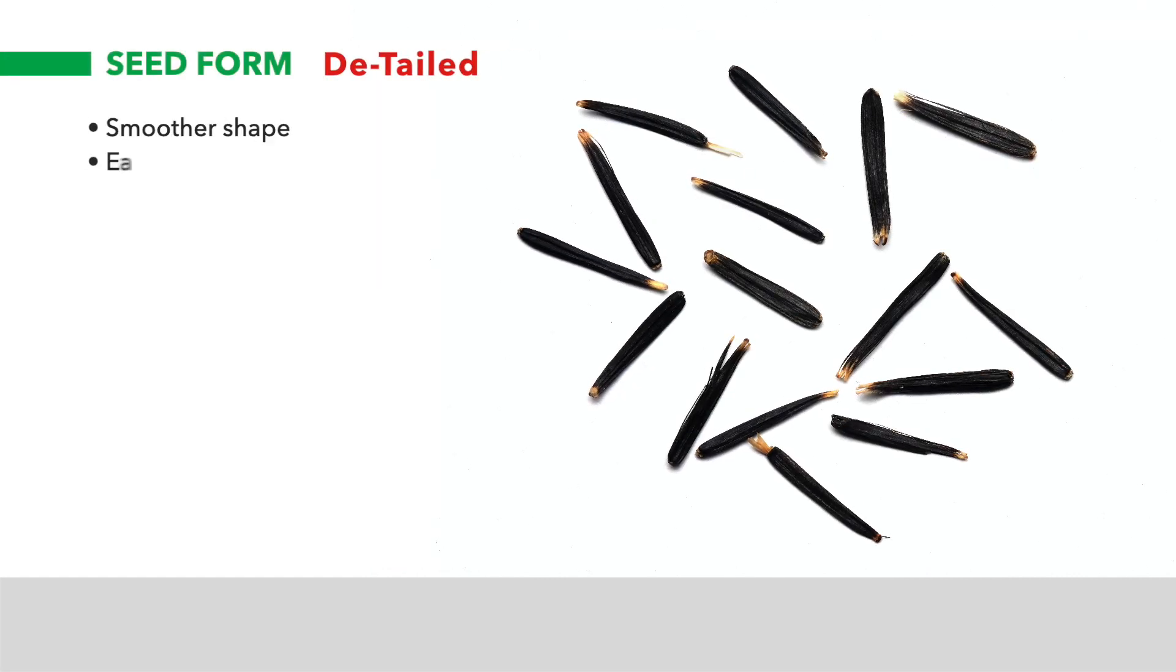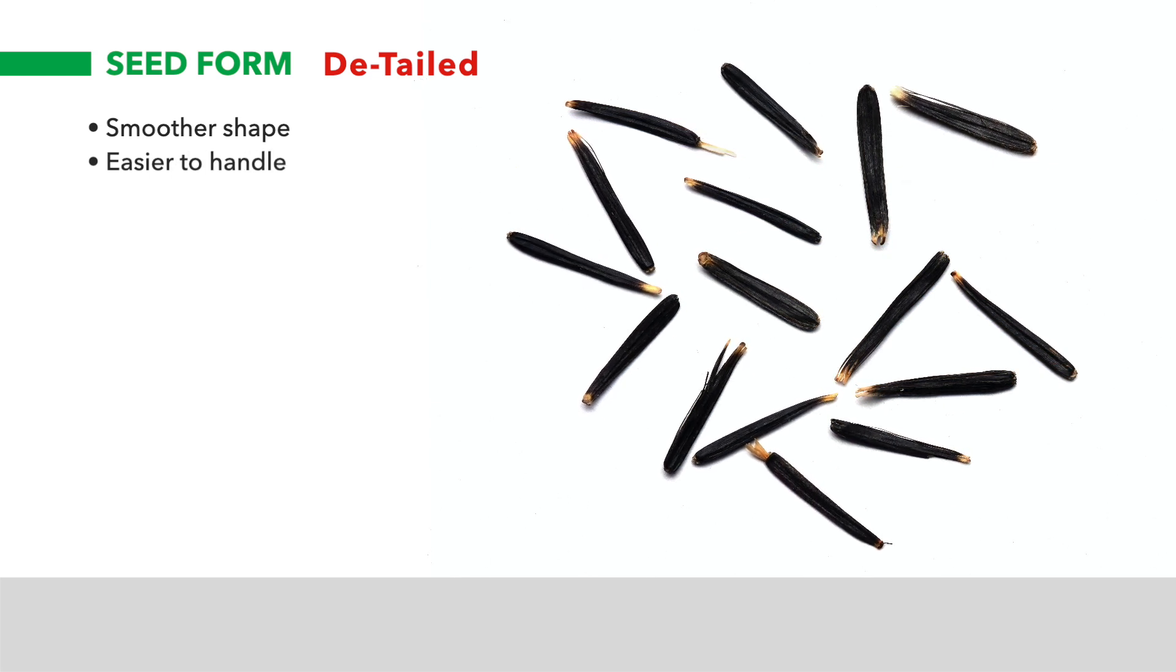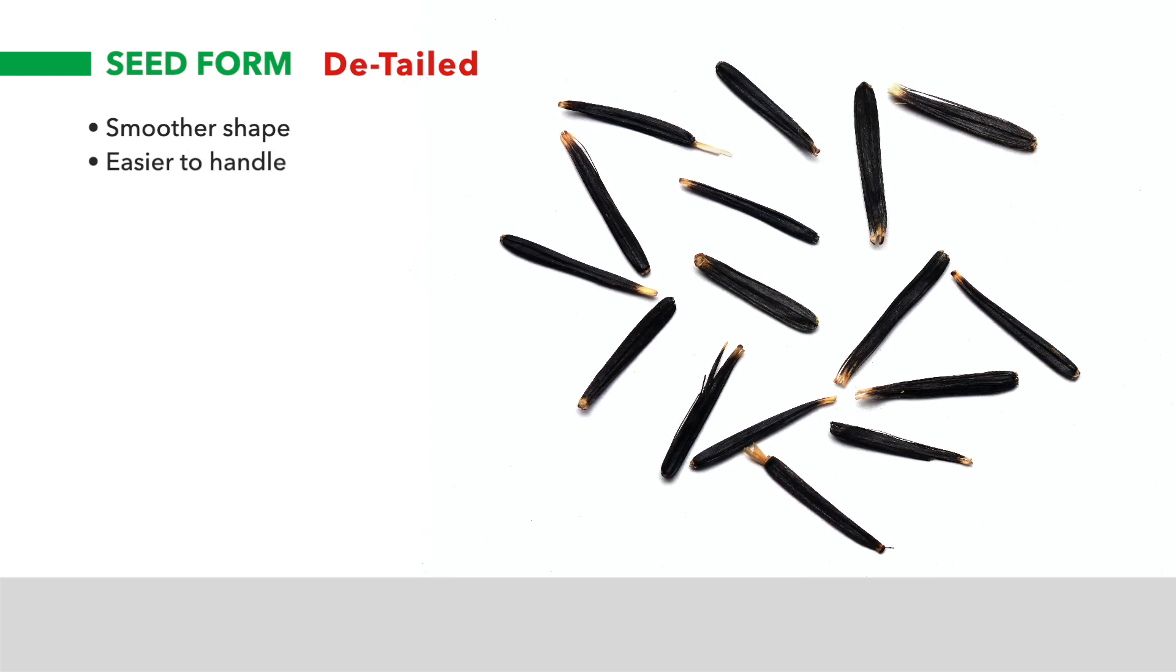Seed tails can interfere with automatic seed sowing machines. Our de-tail process gives the seed a smoother shape that is easier to handle.